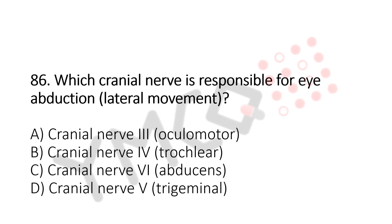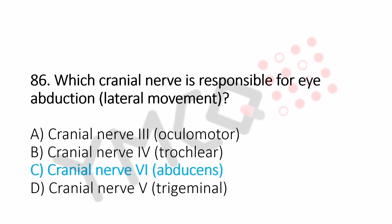Which cranial nerve is responsible for eye abduction — lateral movement? Option A: cranial nerve 3, oculomotor. Option B: cranial nerve 4, trochlear. Option C: cranial nerve 6, abducens. Option D: cranial nerve 5, trigeminal. And the answer is option C, cranial nerve 6, abducens. Now let us move to question number 87.